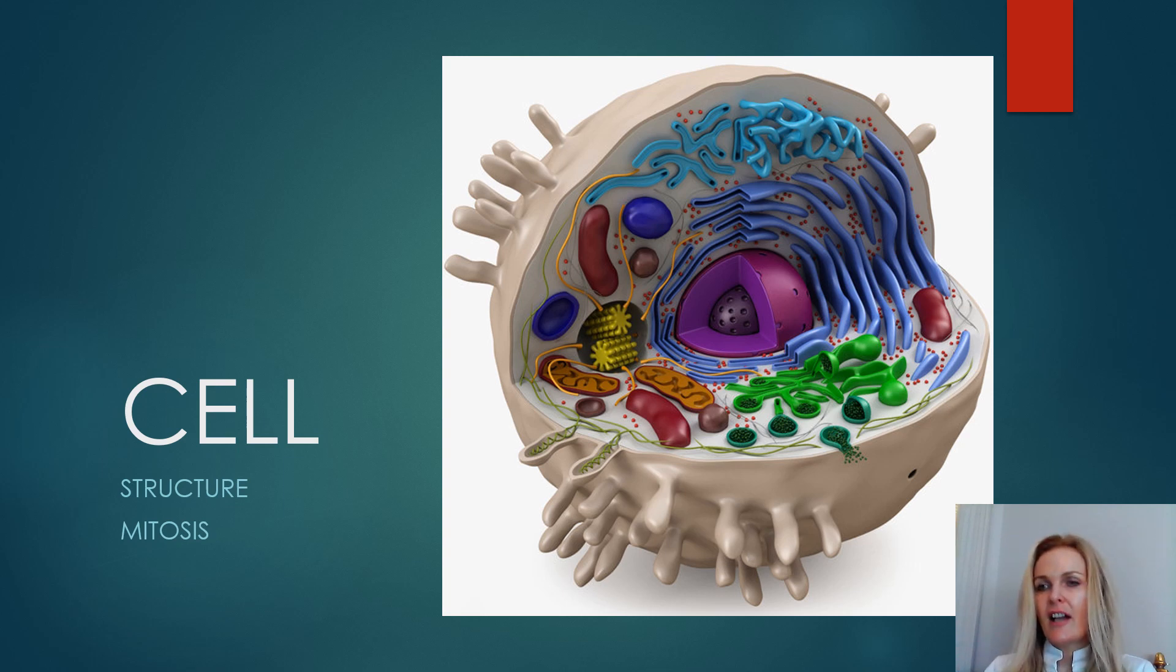Each cell carries out the basic life processes that allow the body to survive. Each type of cell plays a specific role. For example, nerve cells have long projections that help them carry electrical messages to other cells. Muscle cells have many mitochondria that provide the energy they need to move the body.